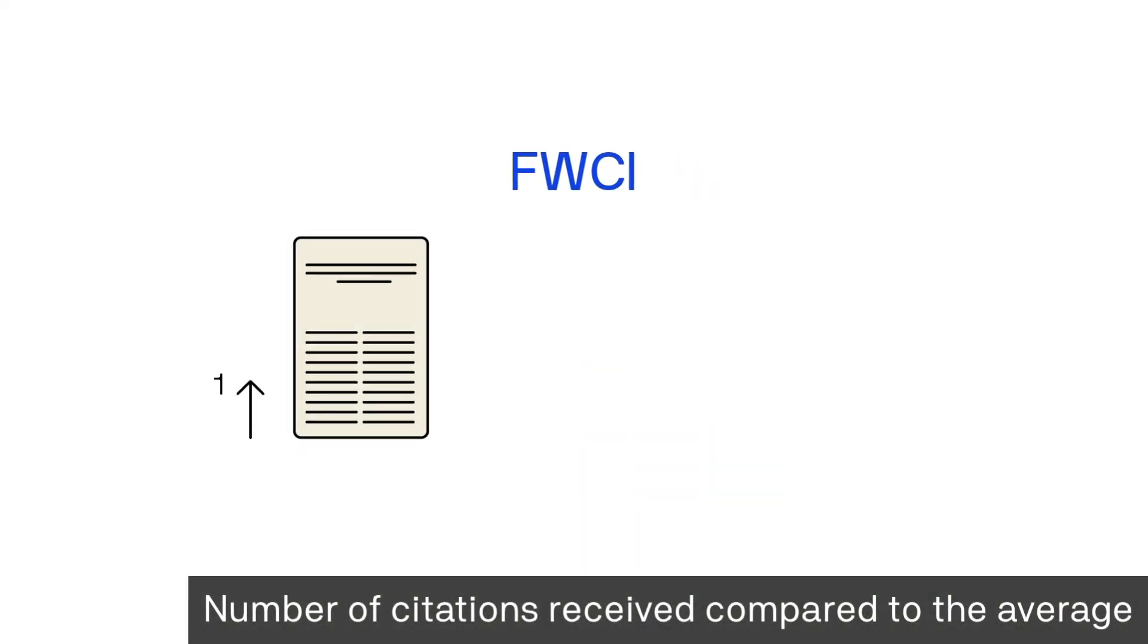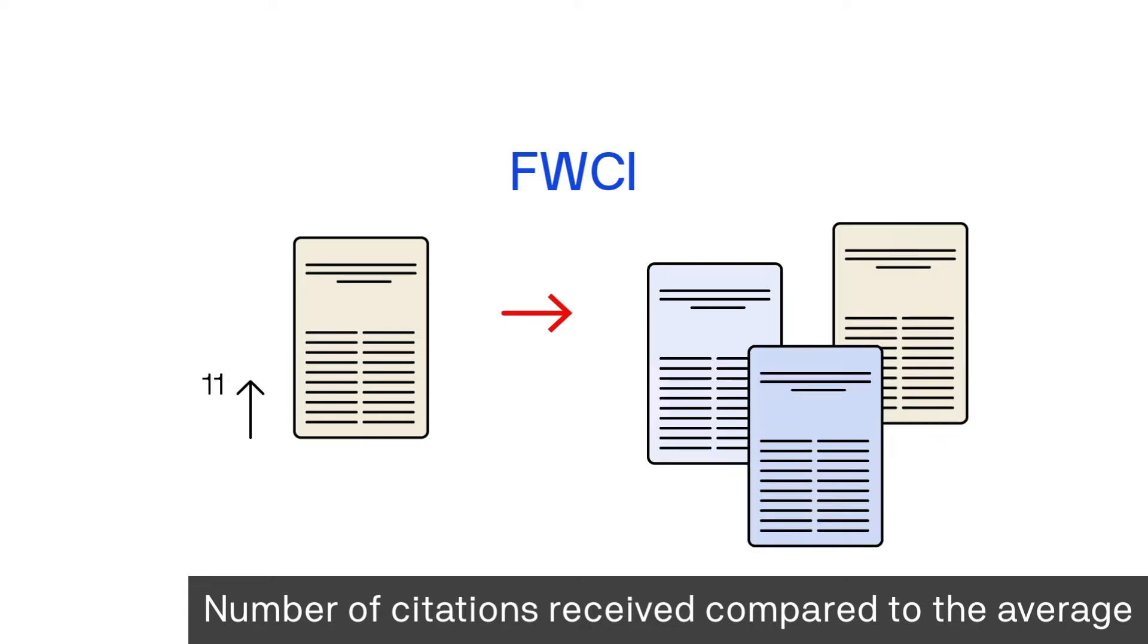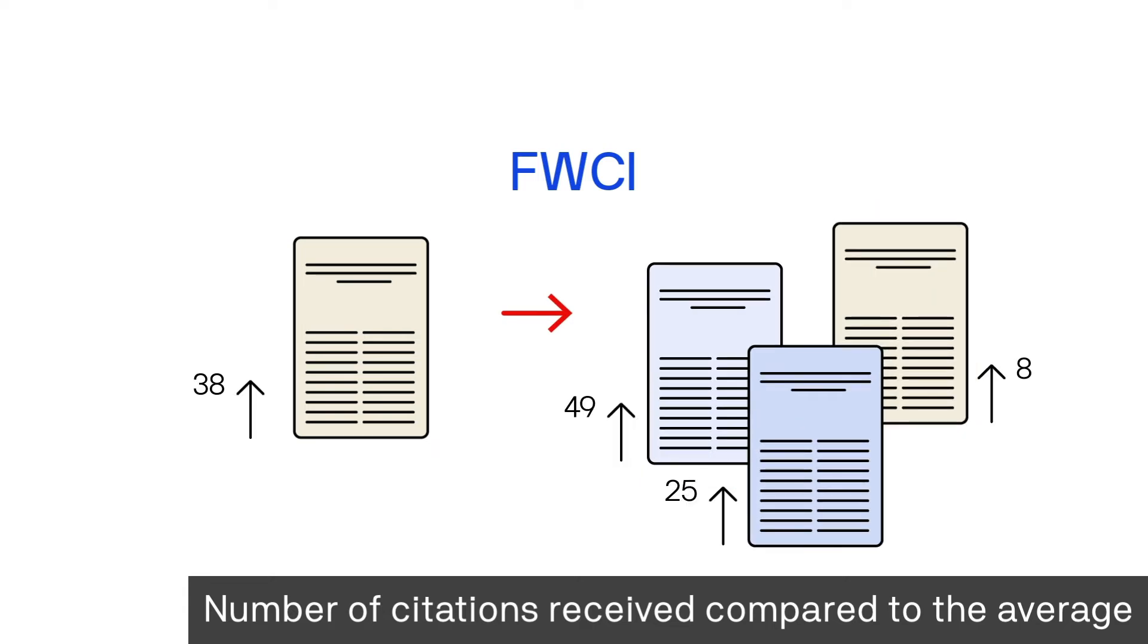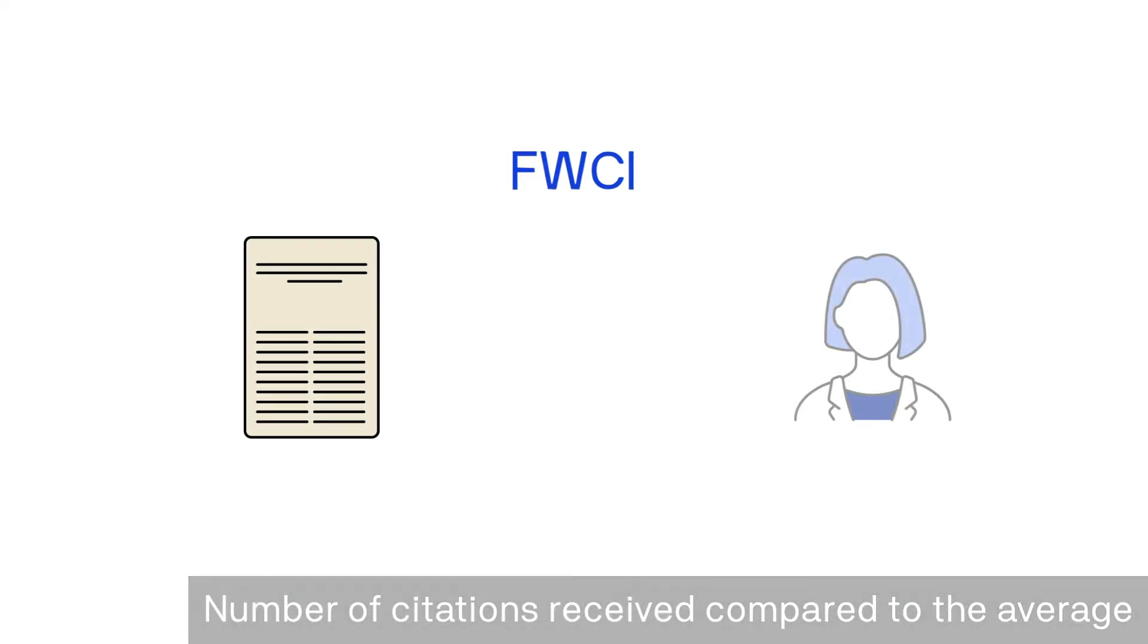Field-weighted citation impact indicates how the number of citations received by an article compares to the average or expected number of citations received by other similar publications. For example, a FWCI of 1 would mean that the researcher's outputs meet the global average of citations in their field.